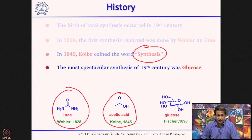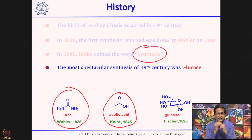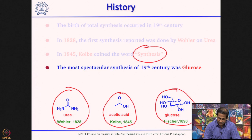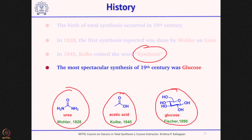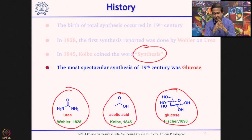In the 19th century, the most spectacular synthesis was reported by Fischer, who made glucose — that was the first time a natural product with chiral centers was synthesized. So these three are great landmarks of the 19th century: Wöhler's urea, Kolbe's acetic acid and coining the word synthesis, and towards the end of the century, Fischer made glucose with five chiral centers.